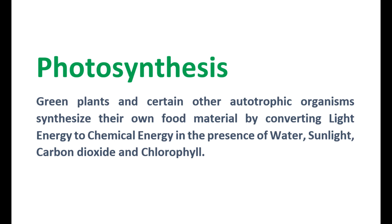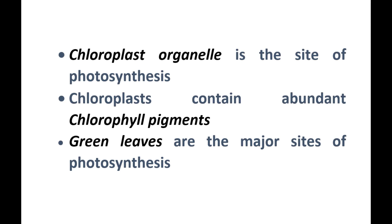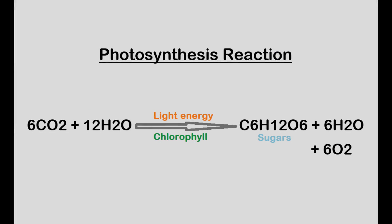In other words, it is a process of converting light energy to chemical energy. Photosynthesis takes place inside cellular organelles called chloroplasts, which contain abundant photosynthetic pigments called chlorophyll. Chloroplasts are found in abundance in green leaves and are therefore the major site of photosynthesis in plants. Gaseous oxygen is a major byproduct of the process of photosynthesis.